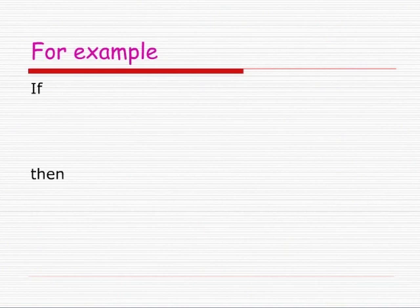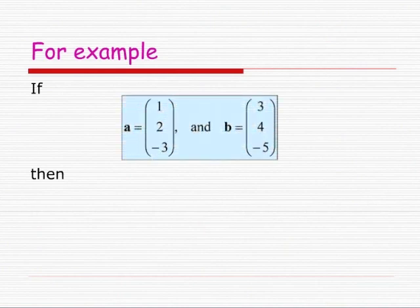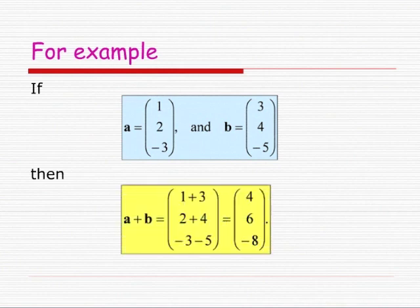For example, if A is (1, 2, −3) and B is (3, 4, −5), then the sum of A and B has components 1 plus 3, 2 plus 4, −3 plus −5, which equals (4, 6, −8).